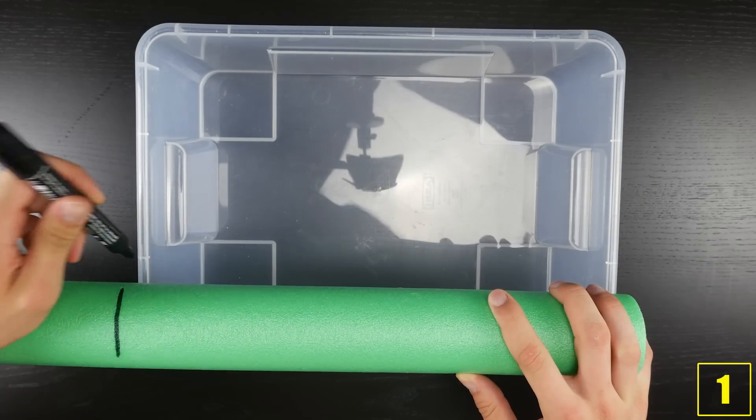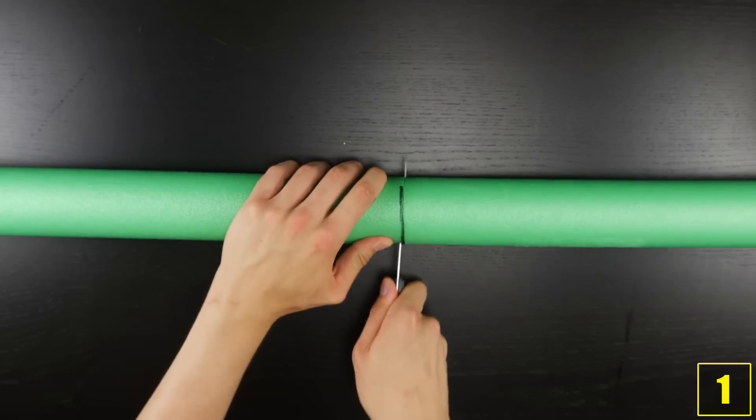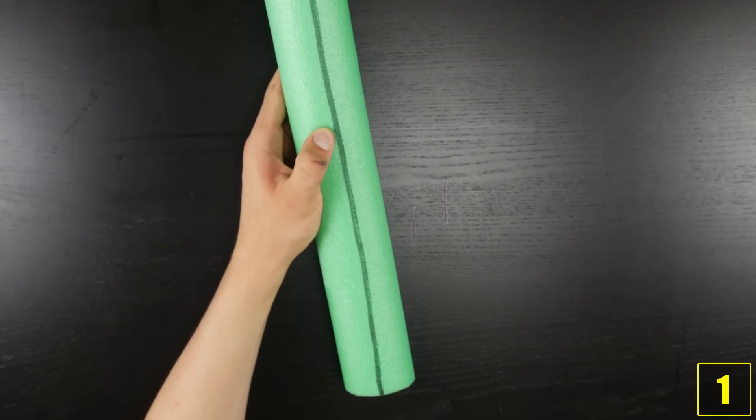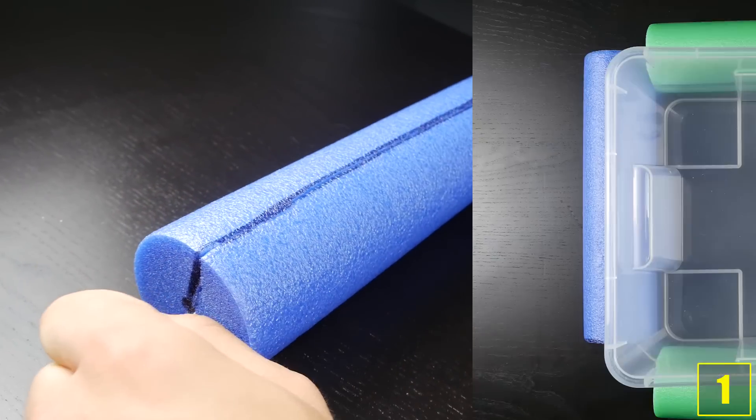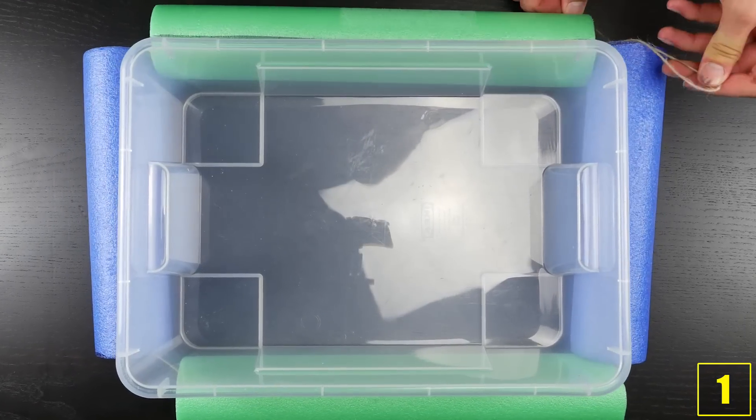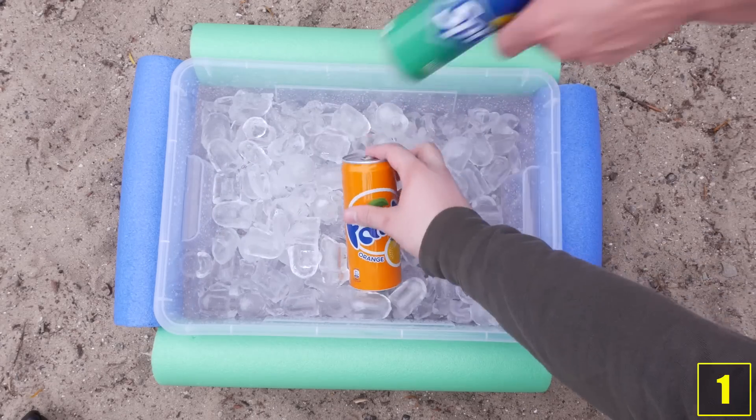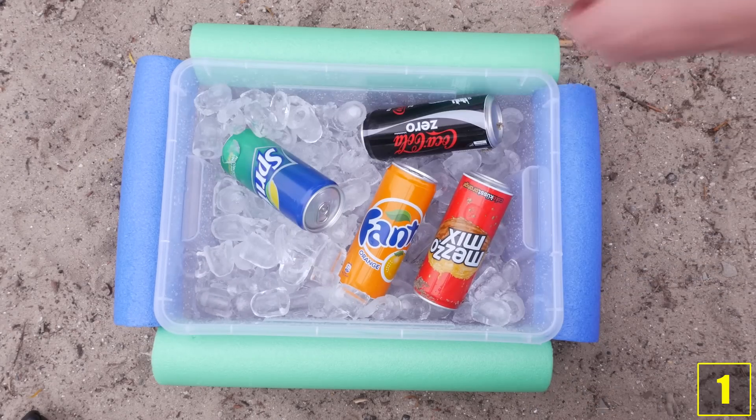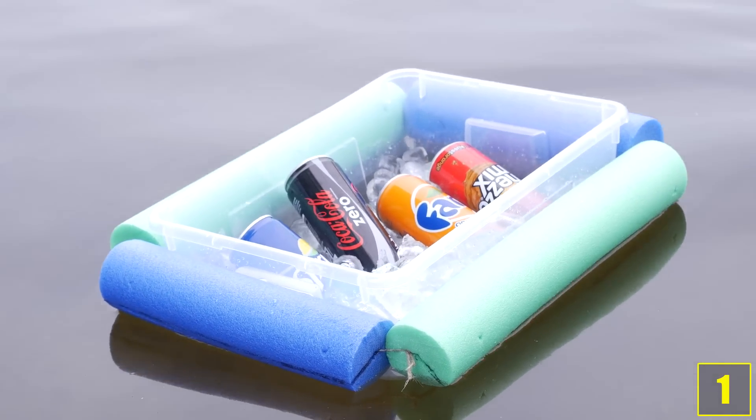And number 1. Take any kind of waterproof box and cut two pool noodles as you can see here. Attach all pieces with string and wrap the construction around the box. Fill it with ice and there you have it. Your personal little refrigerated bar which even floats in water.